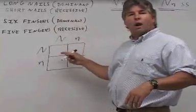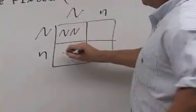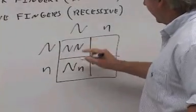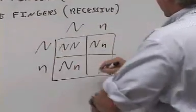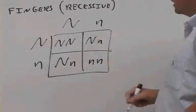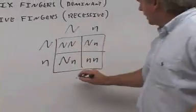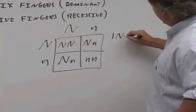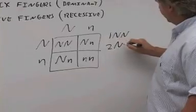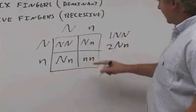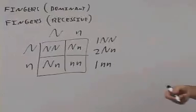When you do this cross, you intersect the letters and you get: big N big N, big N little N, big N little N, and little N little N. The ratio for that is one big N big N, two big N little N, and one little N little N — a one-two-one ratio.